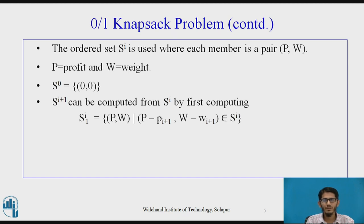Now, si+1 can be computed from si by first of all computing si1. Now, what is si1? Si1 is a set of all pairs (p, w) such that (p-pi+1, w-wi+1) would belong to si. Now, pi+1 and wi+1 are the profit and weight of the object number i+1.